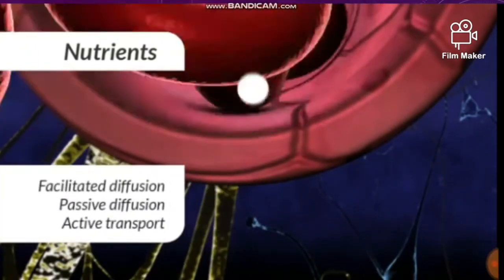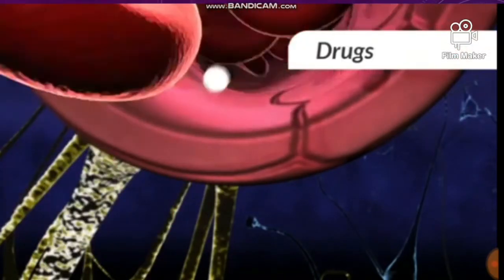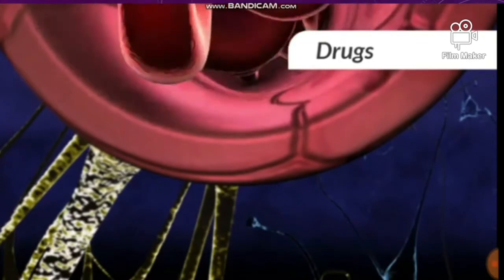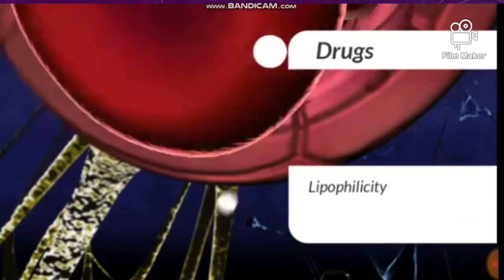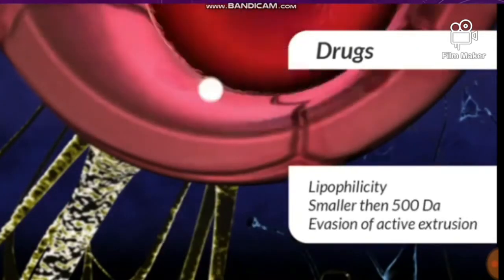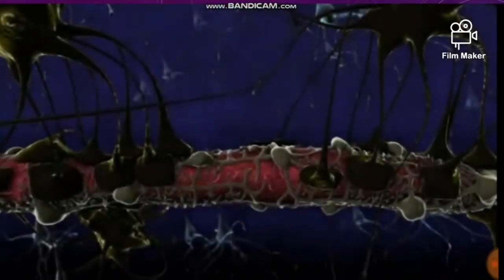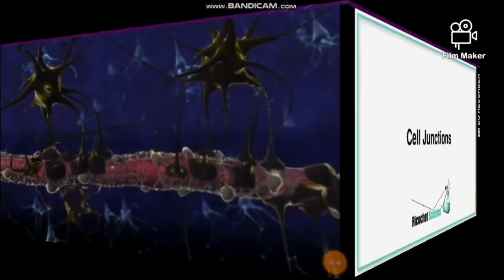The blood-brain barrier is permeable only to some molecules, such as nutrients entering the brain, or waste products, hormones, and excess neurotransmitters that leave the brain. Only a small number of drugs are able to translocate it. To do so, these molecules require lipophilicity, a size smaller than 500 Daltons, and evasion of mechanisms of active extrusion. We know that because of the size of the virus, it could pass easily through our junctions.